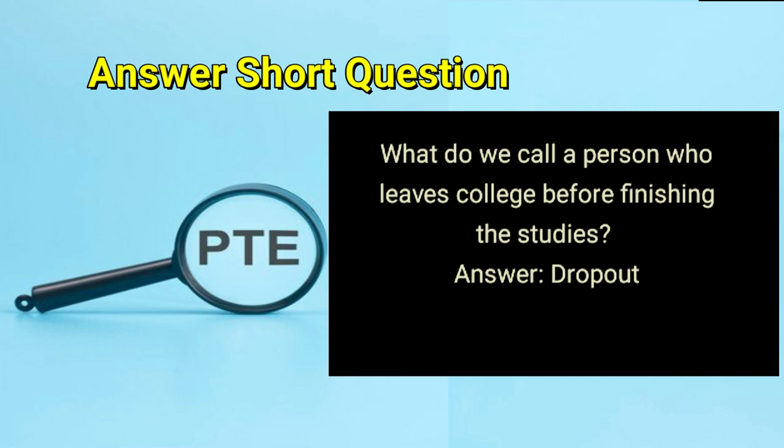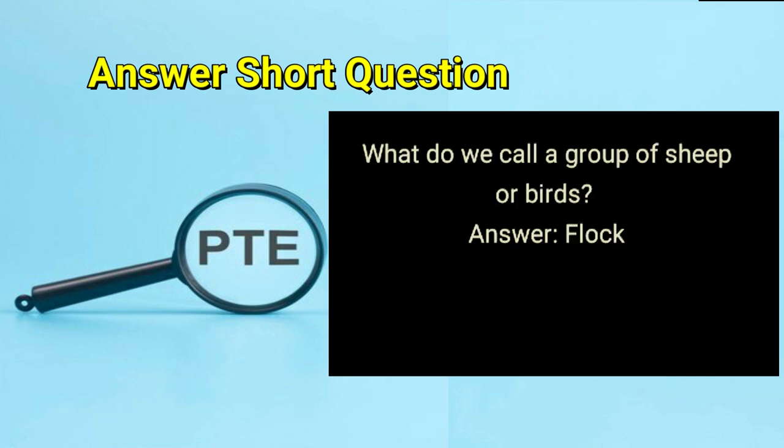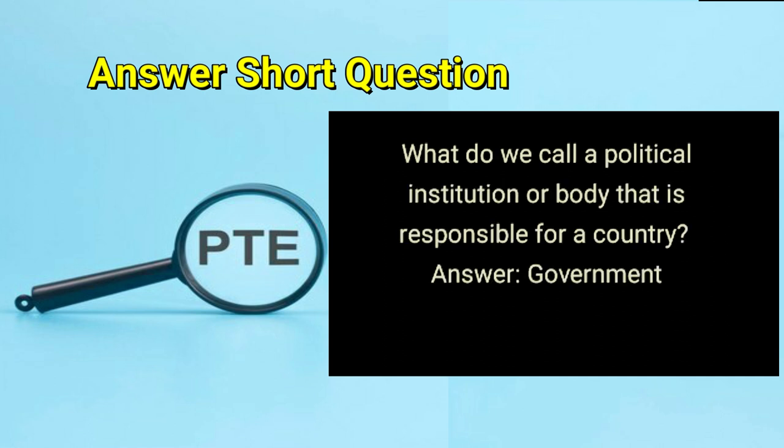What do we call a person who leaves college before finishing their studies? Answer: dropout. What do we call a group of sheep or birds? Answer: flock. What do we call a political institution or body that is responsible for a country? Answer: government.